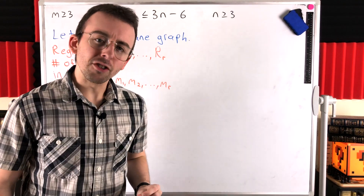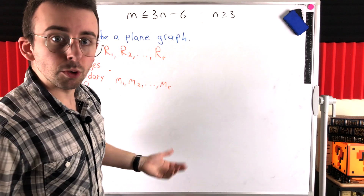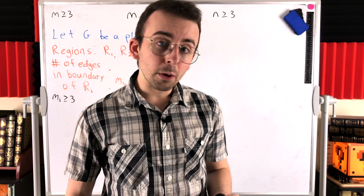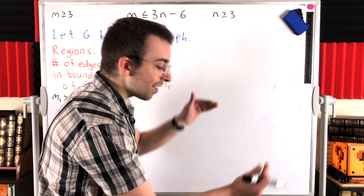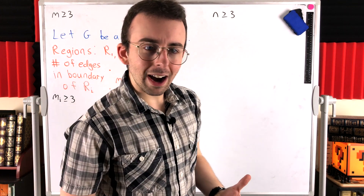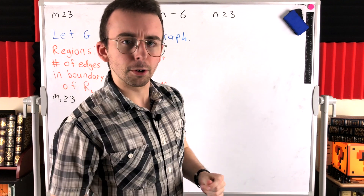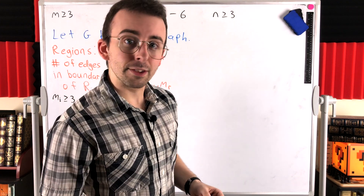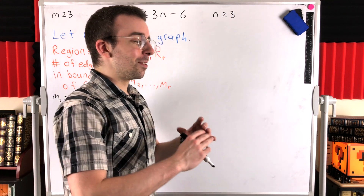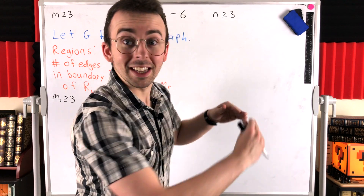If the exterior region has zero edges in its boundary, and our graph has at least three edges, then those zero boundary edges would have to entirely enclose all the other edges of the graph — otherwise, those other edges would be incident to the exterior region and part of its boundary. But that's clearly impossible: zero edges can't enclose the rest of the graph — that would require a cycle.